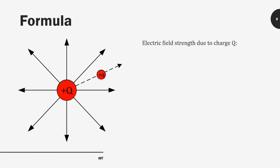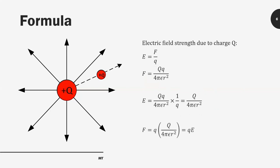Next we're going to look deeper into the formula. The electric field strength due to charge Q is given by E equal to F divided by Q. Combining with the electrostatic force from Coulomb's law, we can get a new formula: E equal to Q divided by 4 pi epsilon r squared. Also, the electrostatic force gives us a new formula which is the product of Q and E, that is F = QE. Note that Q here is the source charge (capital Q) and the subject charge is the small letter Q.